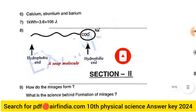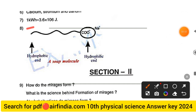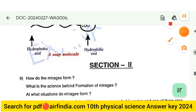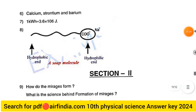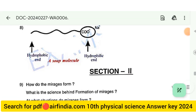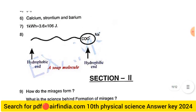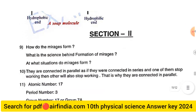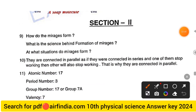Question 7 answer: 1 kWh = 3.6 × 10⁶ joules. Question 8 answer: The diagram of a soap molecule, showing the hydrophobic and hydrophilic ends of the sodium stearate molecule.